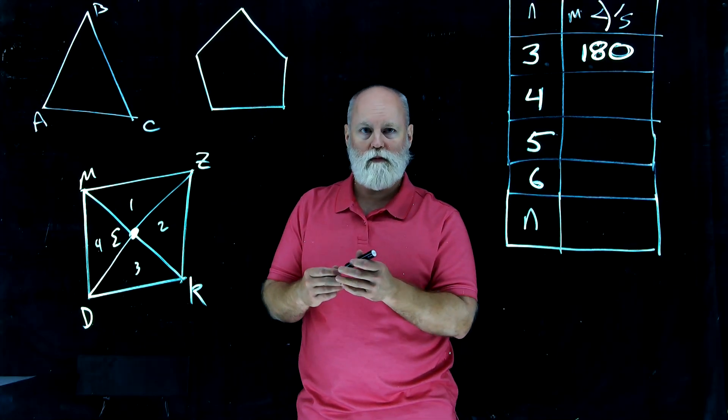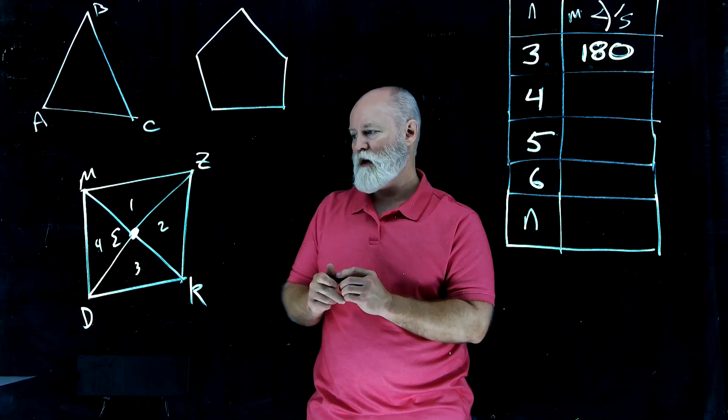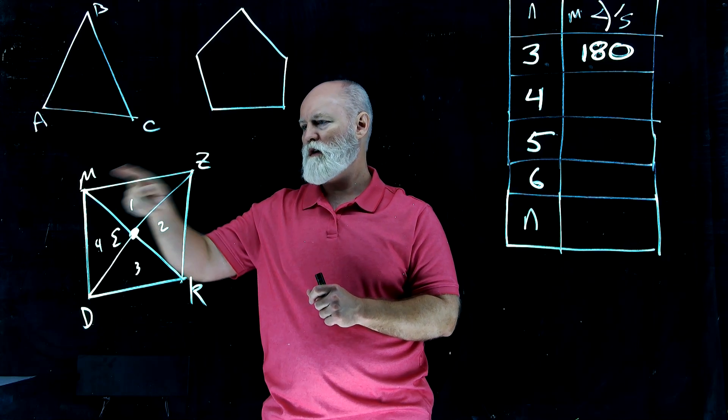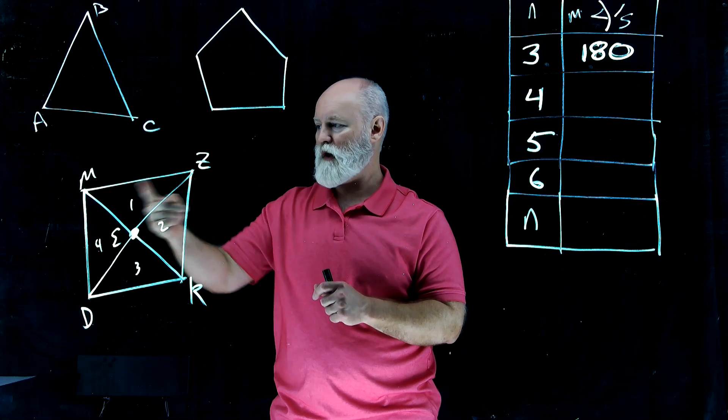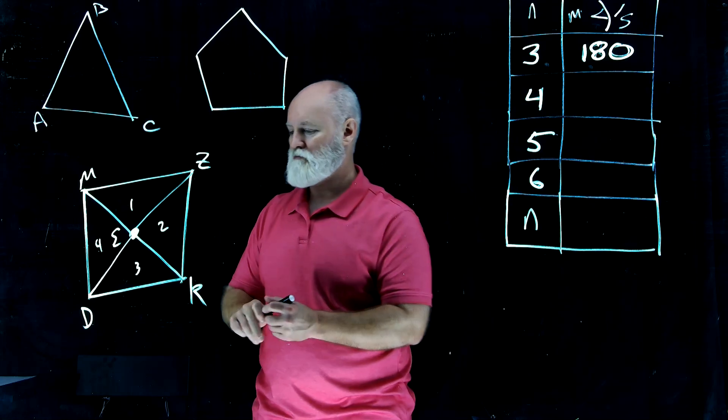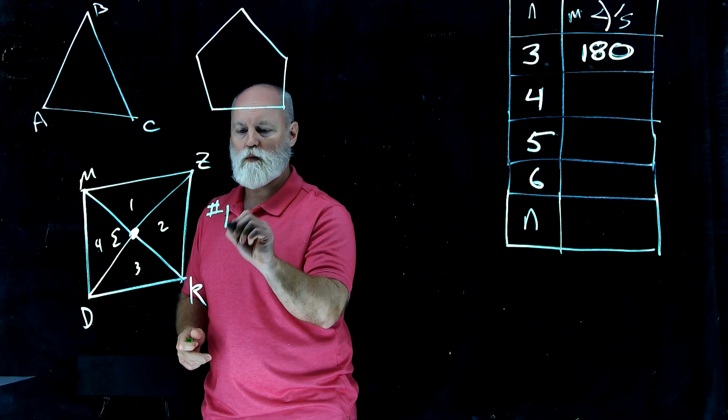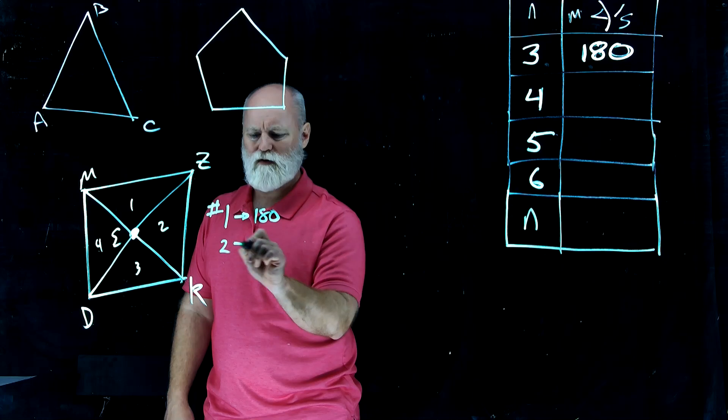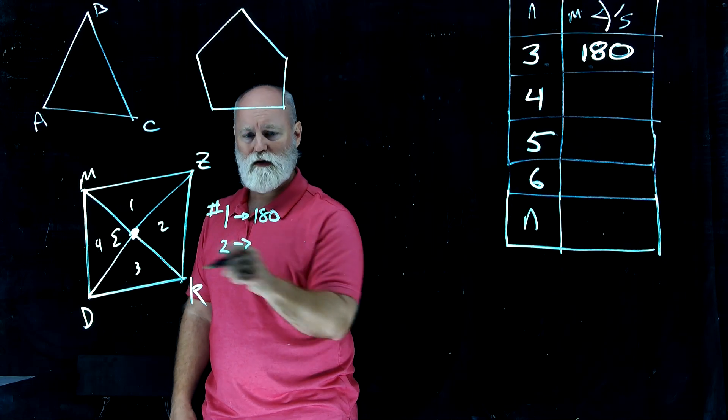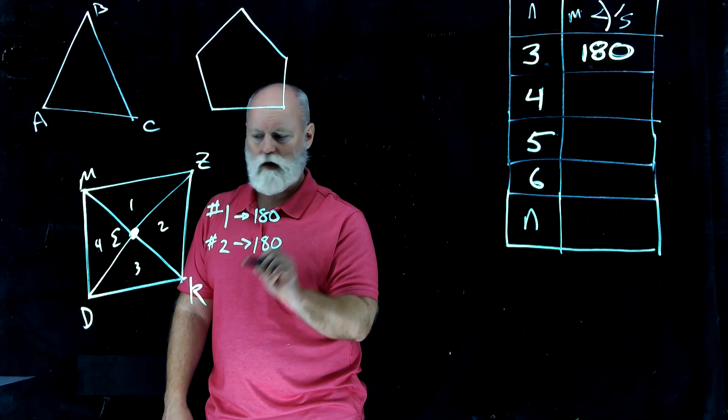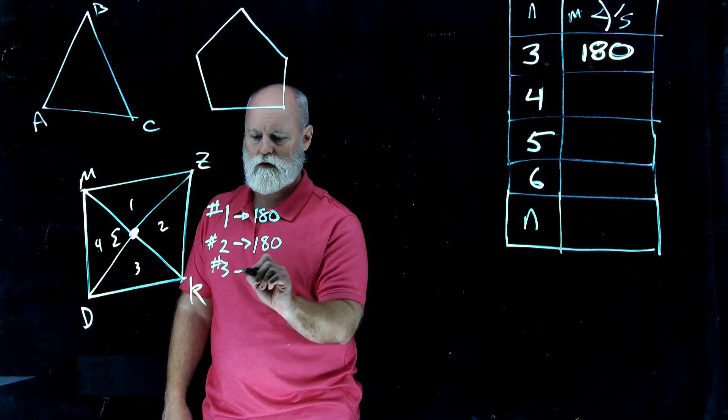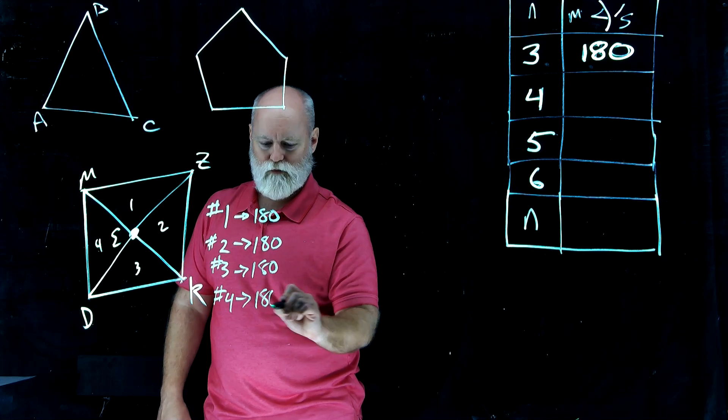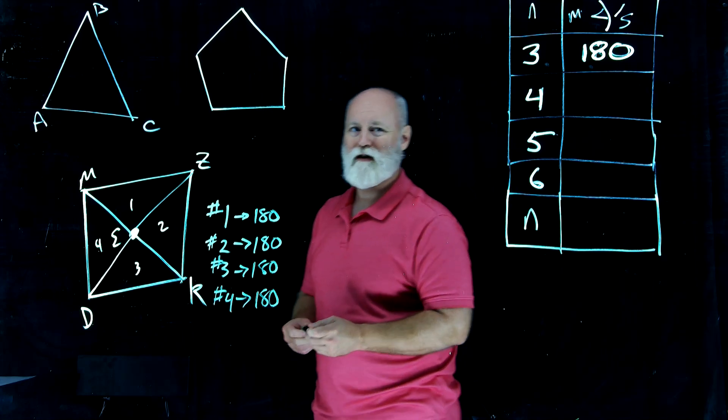We know that the measure of each triangle has a sum of 180 for the three angles. So triangle MZE, those three angles add to 180. Triangle number one has a measure of 180. Well, so does triangle number two. Triangle number two has a measure of 180, does three, and then so does four. This seems kind of like a pattern here or something like that, doesn't it?